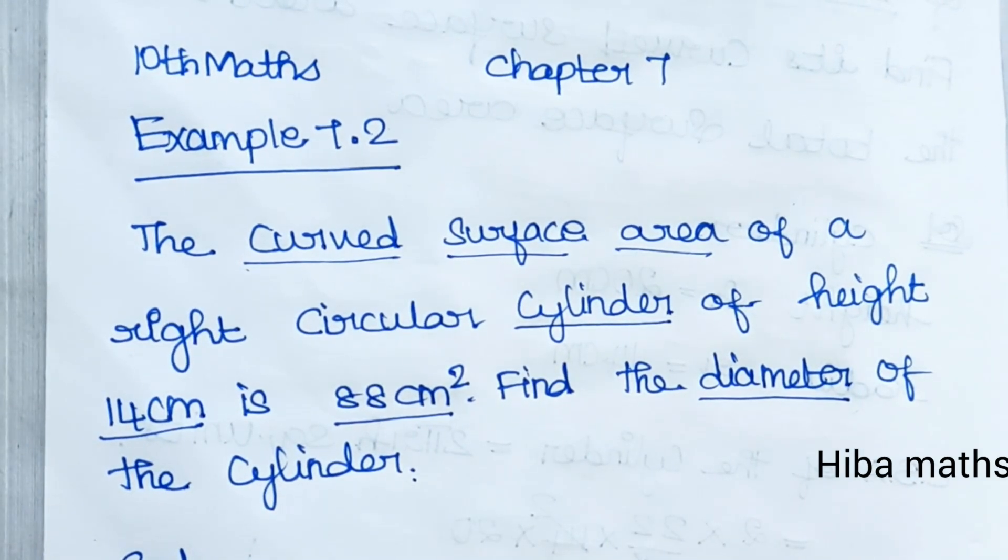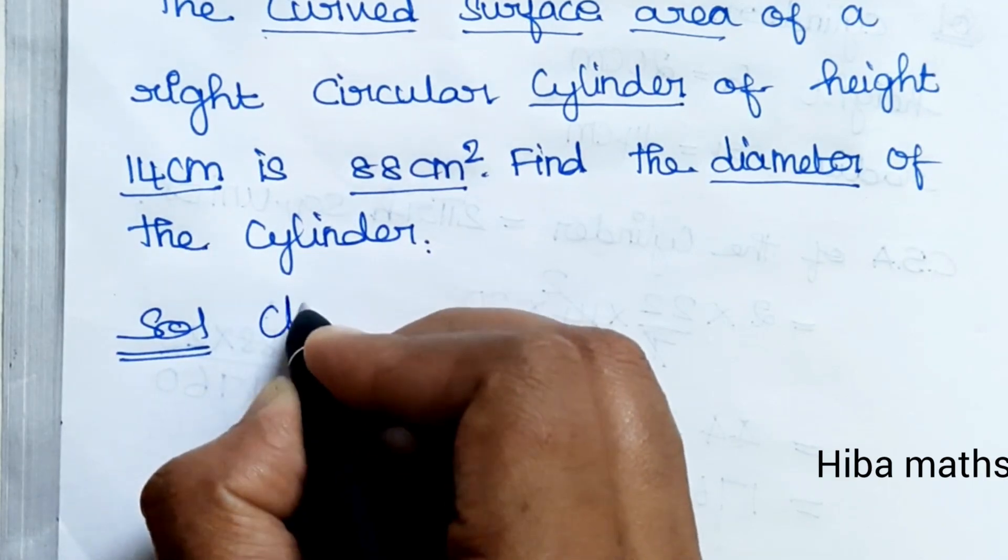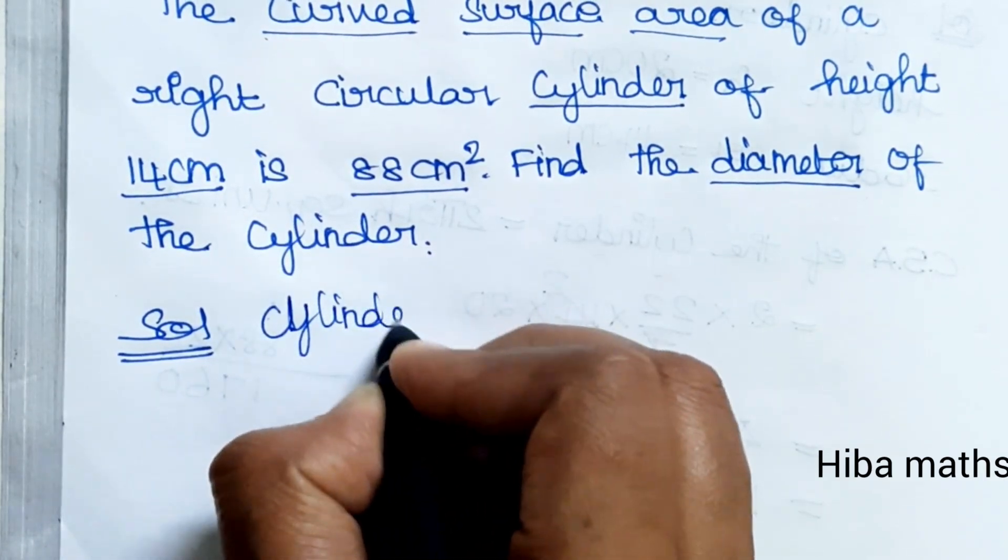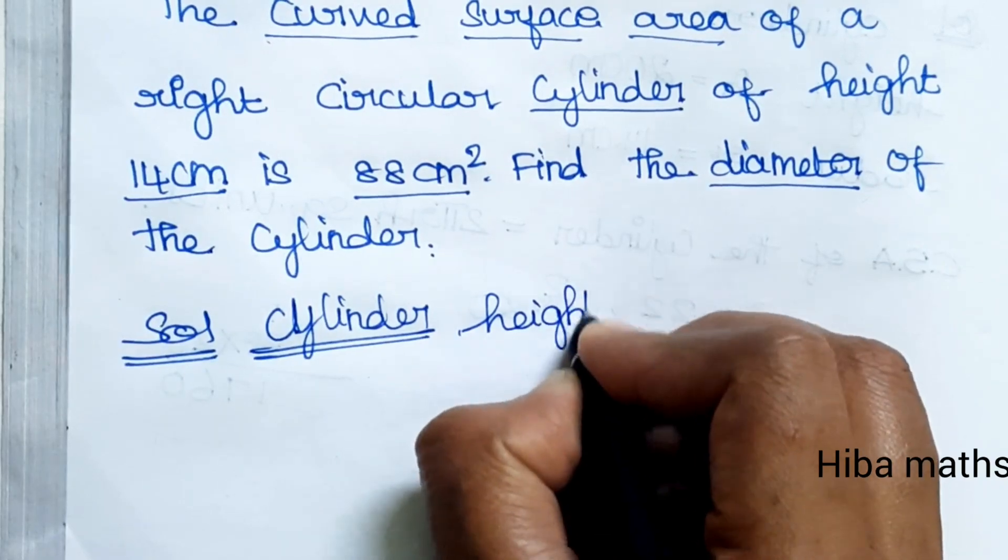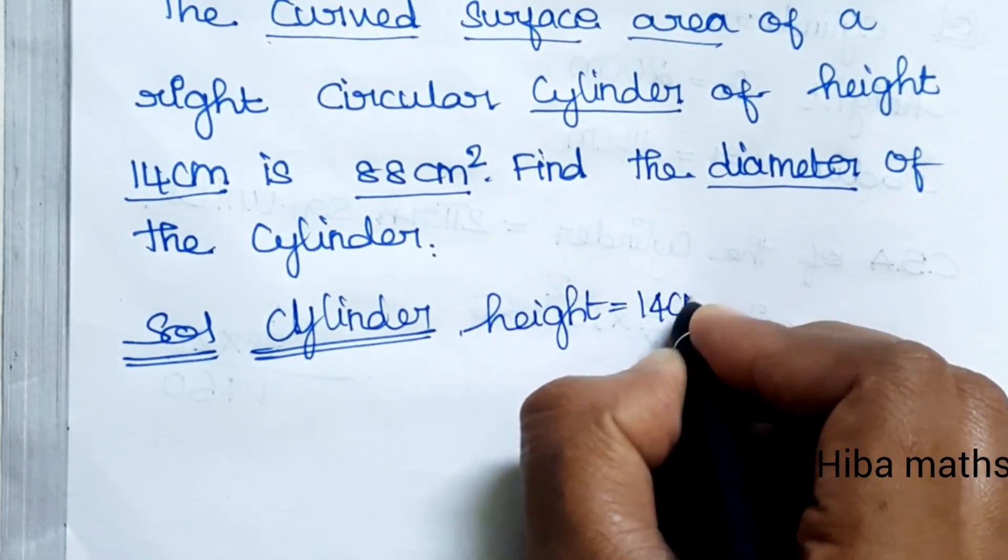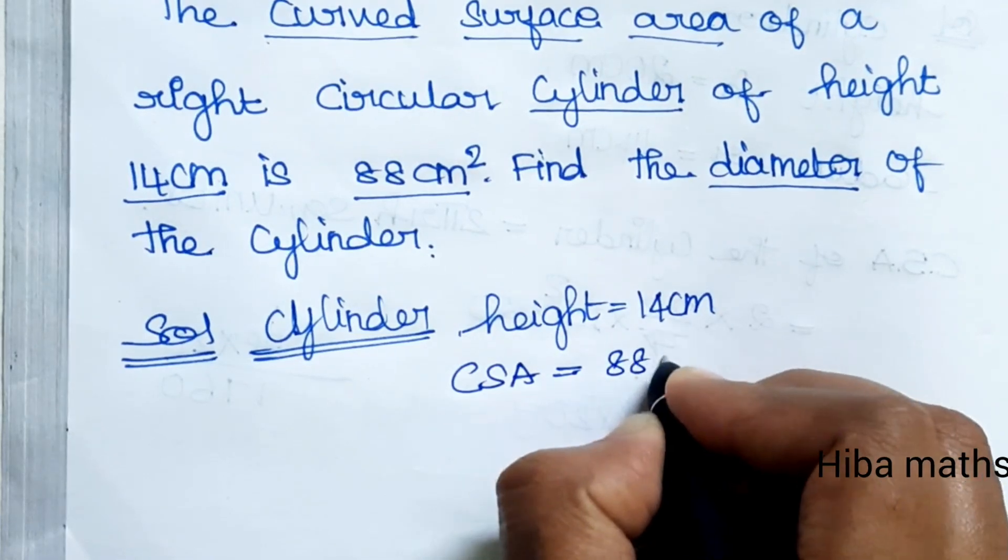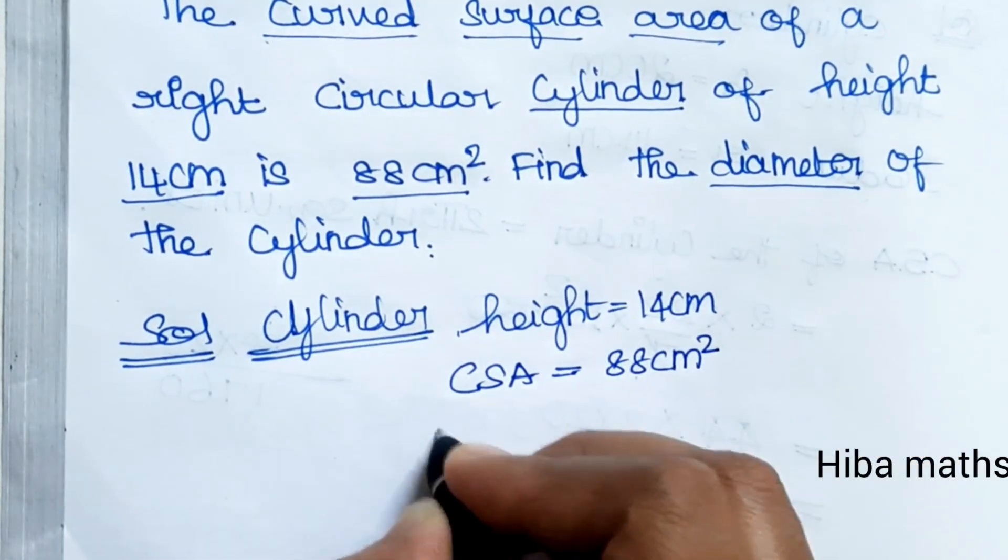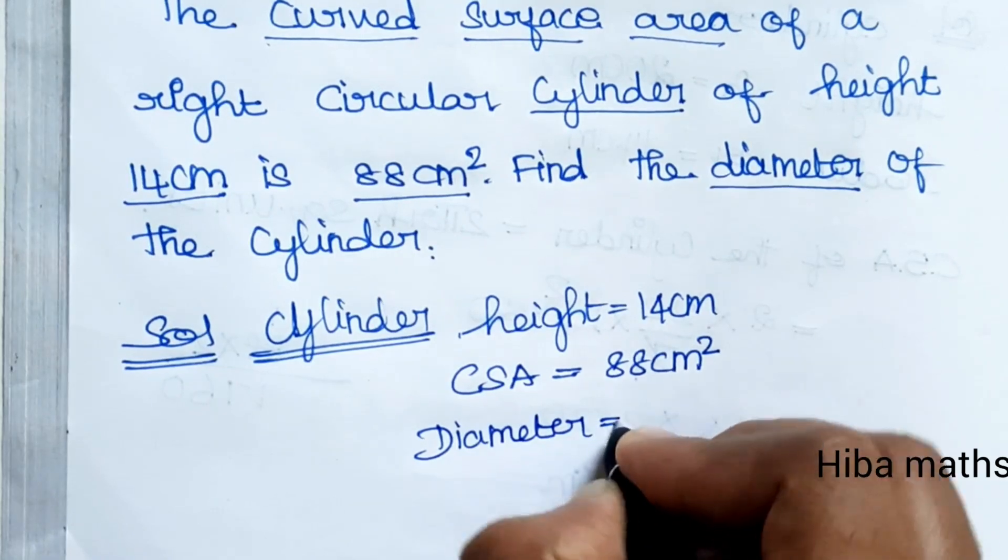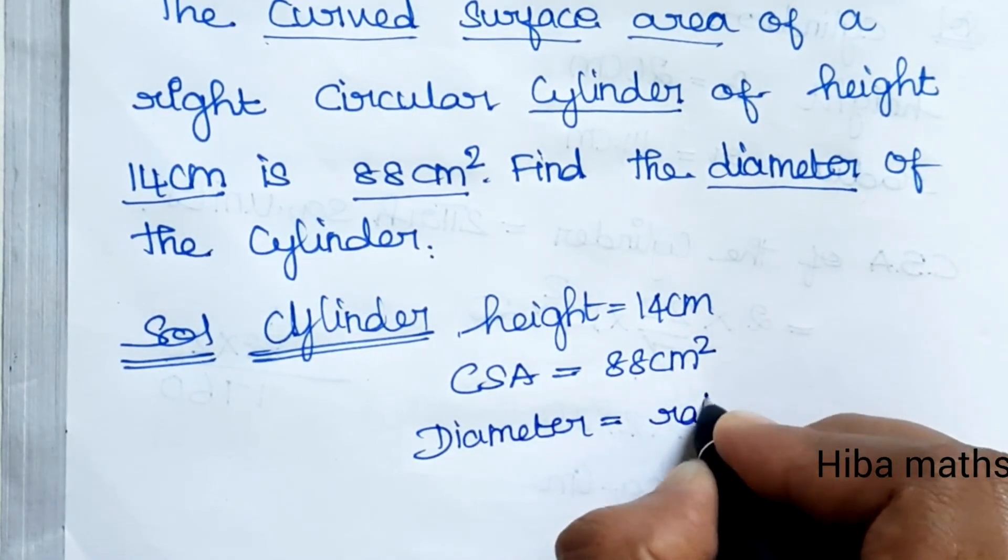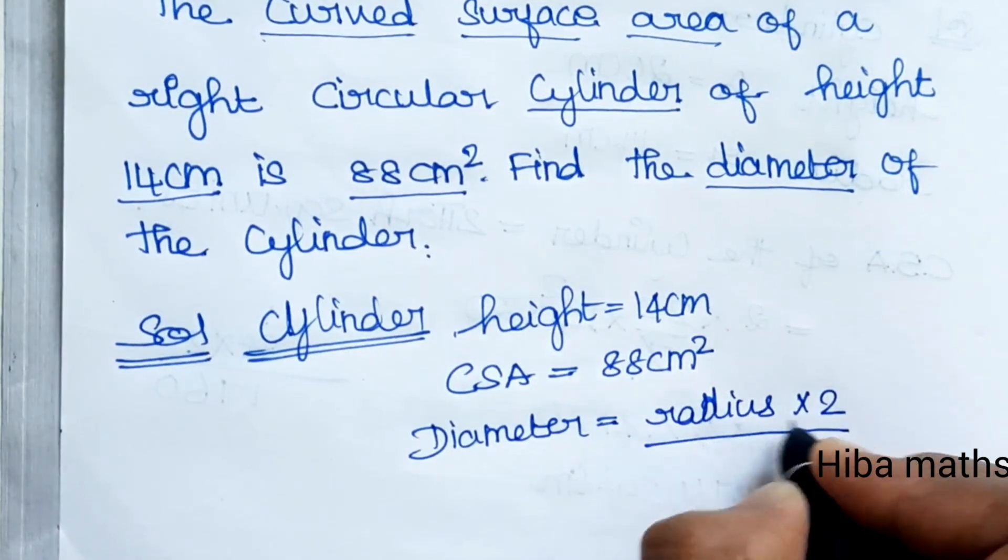Solution: Cylinder height is 14 cm, CSA is 88 cm². We need to find the diameter. Diameter equals radius times 2.